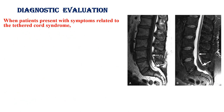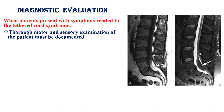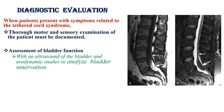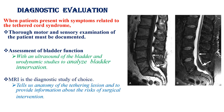When a patient presents with symptoms related to tethered cord syndrome, we should first perform a thorough motor and sensory examination and document the findings. Next is assessment of bladder function with ultrasound of the bladder and urodynamic studies to analyze bladder innervation and function. MRI is the diagnostic study of choice, providing information about the anatomy of the tethering lesion and the risks of surgical intervention.